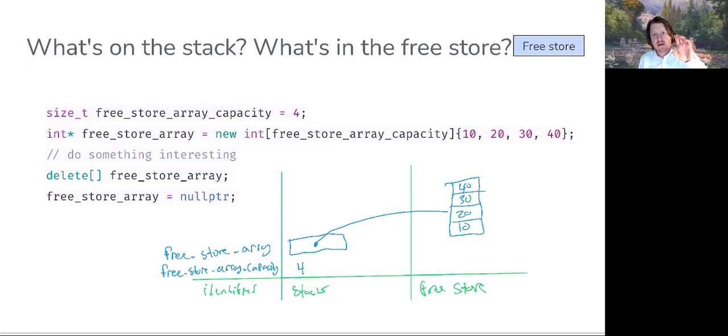In this diagram, I have the identifier, a column for stack where an identifier's value will go, and then a free store, which is just out there. It's disorganized. We'll see the stack's always going to be aligned in the order that variables are declared.